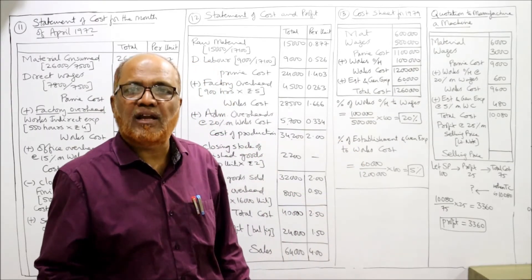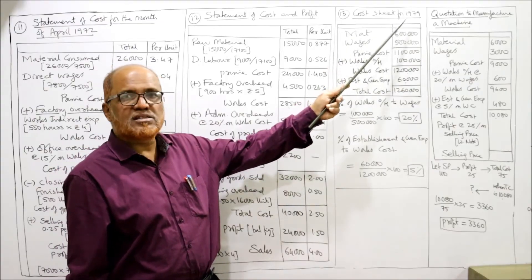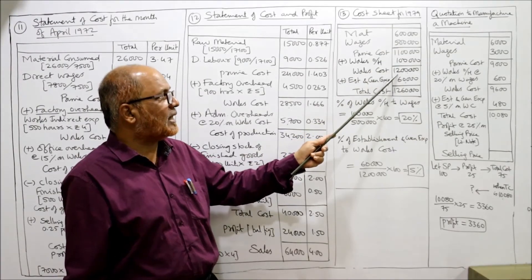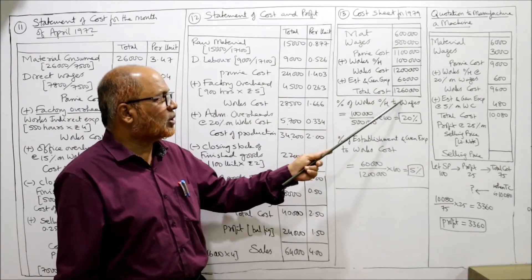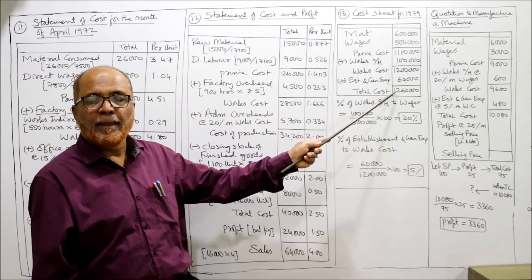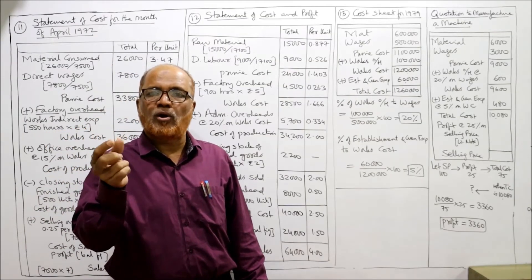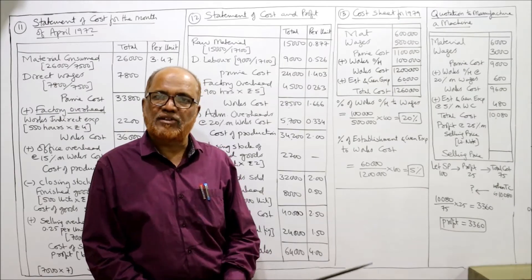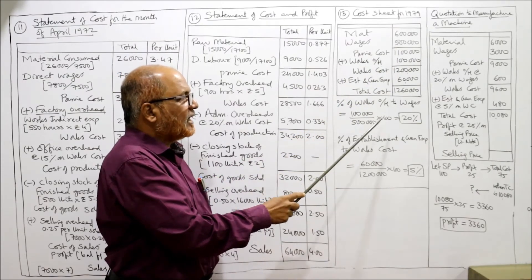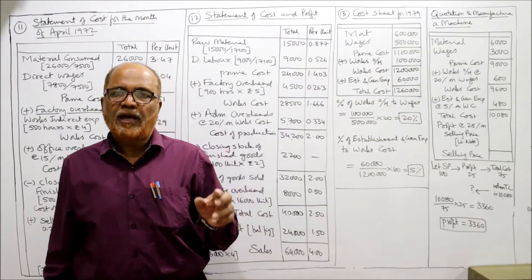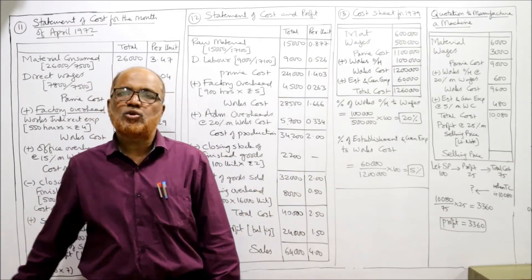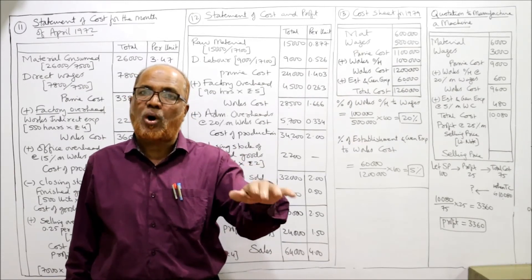Cost sheet for 1979: material 6,00,000 + wages 5,00,000 = prime cost 11,00,000; works overhead 1,00,000 gives works cost 12,00,000; establishment and general expenses 60,000 gives total cost 12,60,000. Percentage of works overhead on productive wages: 1,00,000 ÷ 5,00,000 × 100 = 20%. So works overhead is 20% of wages.